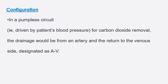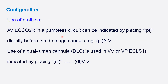In the AV circuit, blood is driven by the patient's own blood pressure for CO2 removal. Drainage is from the artery and return is to the venous side, so it is designated as AV. A pumpless AV extracorporeal CO2 removal circuit is indicated by placing PL directly before the drainage, making the cannula PL-AV. Use of a dual-lumen cannula in VV or VB ECLS is indicated by placing DL before the configuration, such as DLVV.